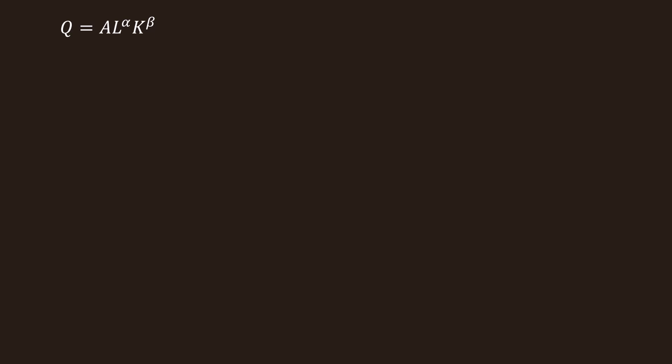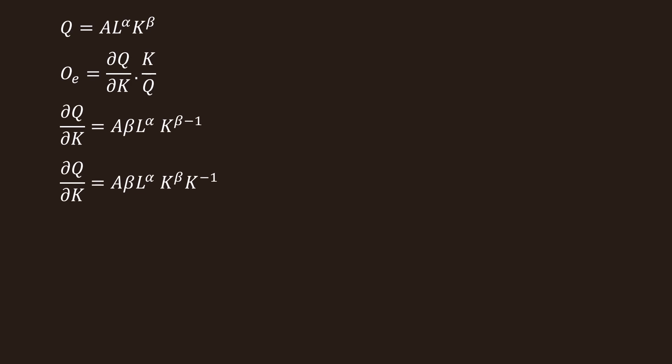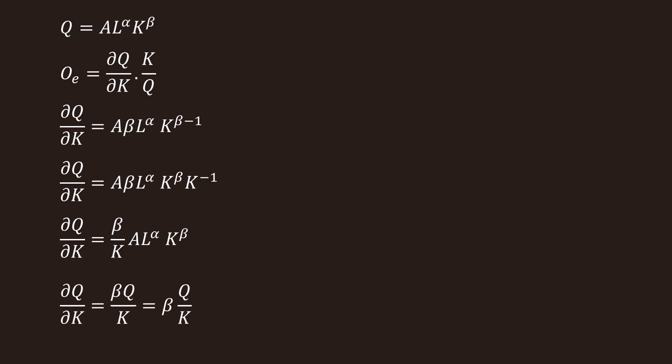In the same way, we can calculate the output elasticity with respect to capital K. One change is made in the formula: as we are calculating output elasticity with respect to capital, L is replaced with K. The function is partially differentiated with respect to capital. Following the same procedure, we get dQ/dK equal to (beta / K) times A L^alpha K^beta. Since A L^alpha K^beta equals Q, we rewrite it as dQ/dK equal to beta Q divided by K.